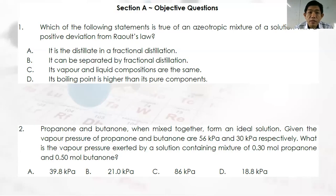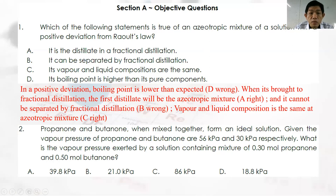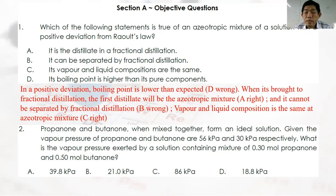Question 1: Which statement is true about the azeotropic mixture of a solution with positive deviation from Raoult's Law? A positive deviation is when the boiling point is lower than expected. In fractional distillation, the first distillate will usually be the azeotropic mixture. A non-ideal mixture can never be separated using fractional distillation. When it reaches the azeotropic mixture, the vapor and liquid composition are the same. There should be two answers: A and C.